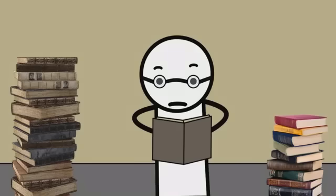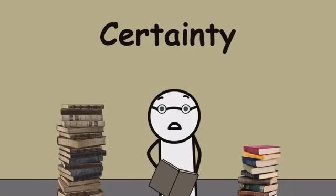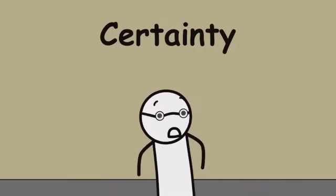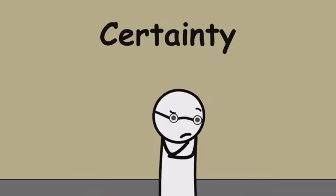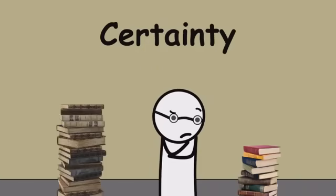The Sorensen's paradox. If knowledge requires absolute certainty, and we can never be completely certain, then it seems that no one can truly know anything. But if we're certain that we can never be certain, that would be knowledge, which contradicts the idea that certainty is impossible.